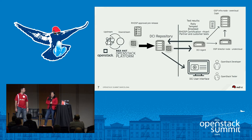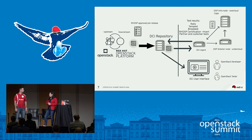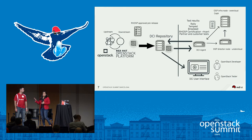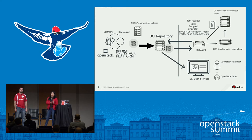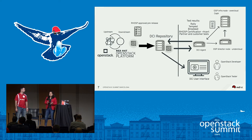We also orchestrate and run a battery of tests that can include Tempest, Rally, BrownBeat — an excellent testing framework that folks from Red Hat work on — and the Red Hat certification test suite. Any partner or customer-specific tests can also be run with DCI. After all tests are done, results get ported back into the DCI repository so we can have access to the logs, presented in a user interface where testers and developers can see what happened, what failed, when it failed, how those failures look, and why it passed or failed.